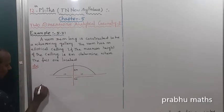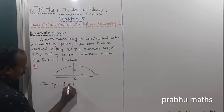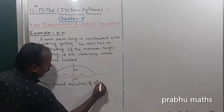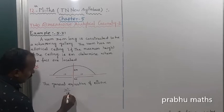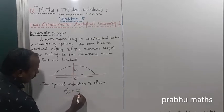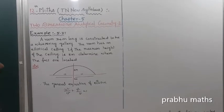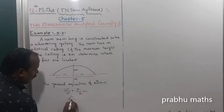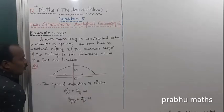Therefore, the general equation of an ellipse is x squared divided by A squared plus y squared divided by B squared equals 1. This is along the major axis, the x-axis. So the equation becomes x squared divided by 17 squared plus y squared divided by 8 squared equals 1.